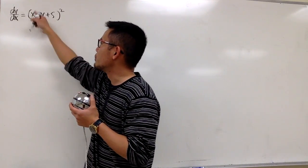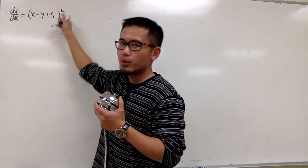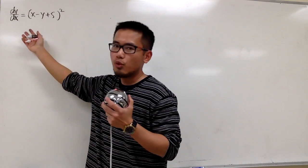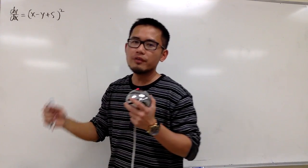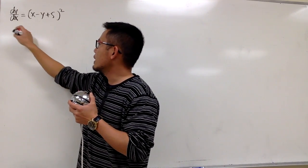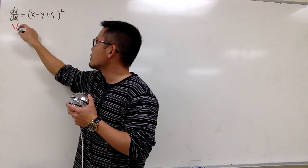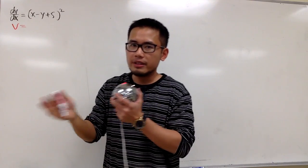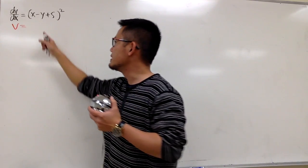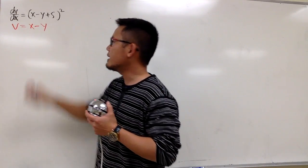This right here — dy/dx equals (x - y + 5)² — is the differential equation in the form g(ax + by). The typical strategy is to let v equal the function part, the ax + y part, which in this case is just x - y.